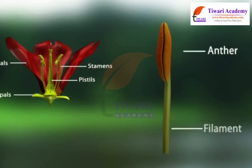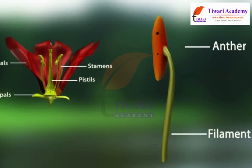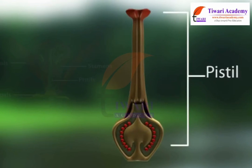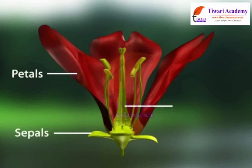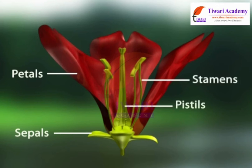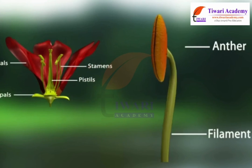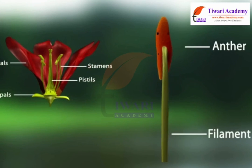Flowers are unisexual when they have either stamen or pistil, whereas bisexual flowers have both stamen and pistil.